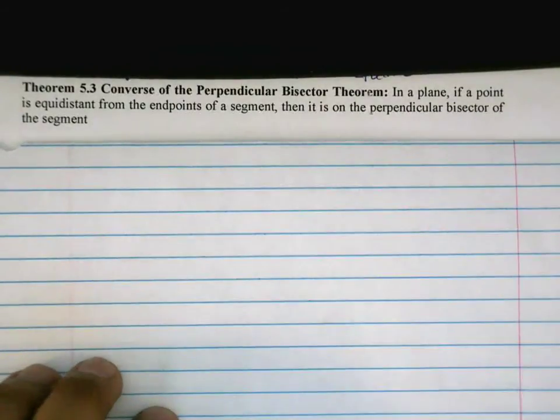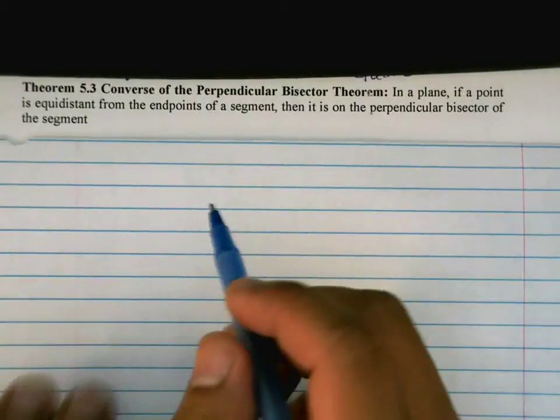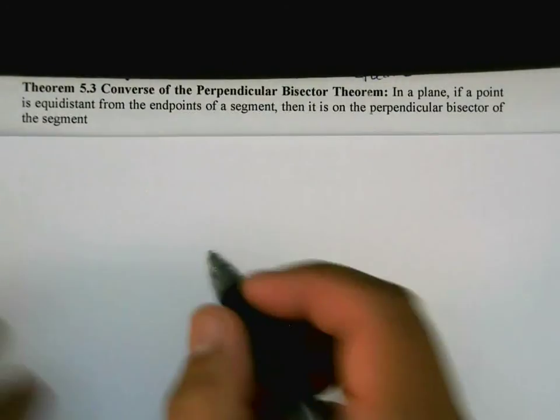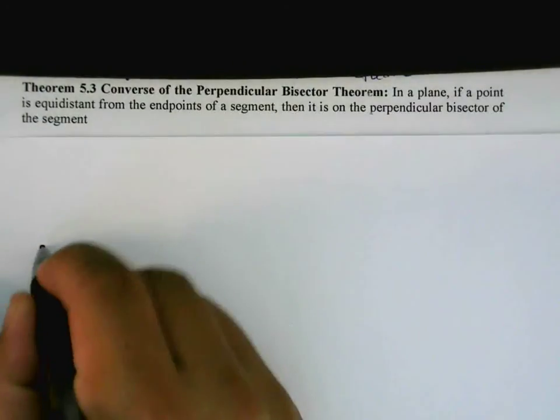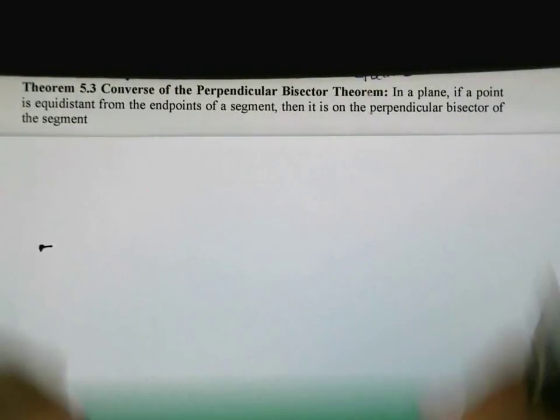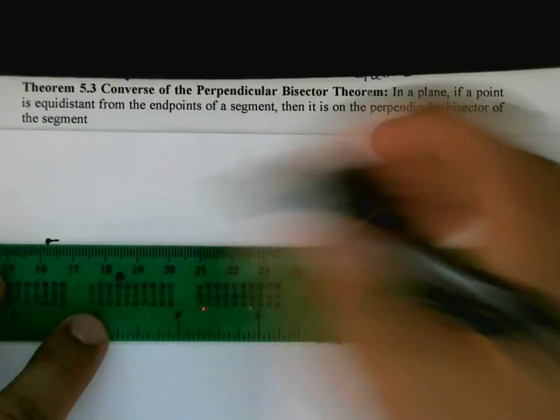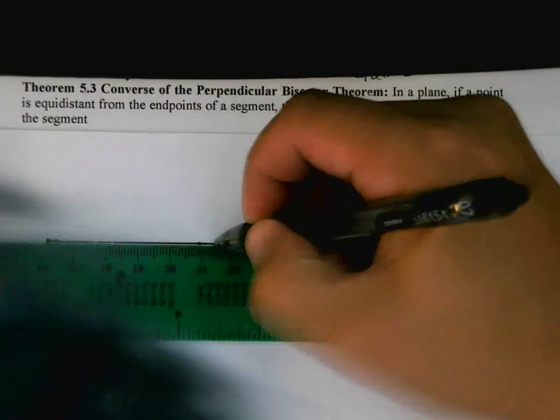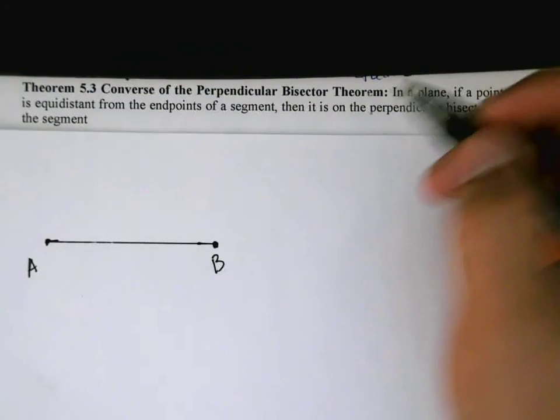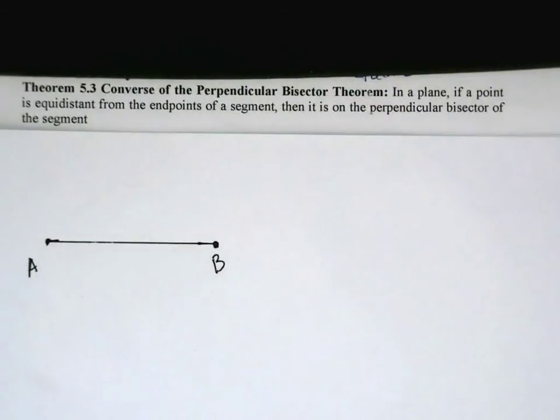Let me use a different color pen here because that always makes things more interesting. All right, so first let's start with a line segment. Let's say that I have some line segment here. We'll call this line segment AB. And then it says if a point is equidistant from the endpoints, so let's say I have some other point here P.